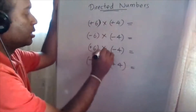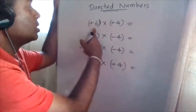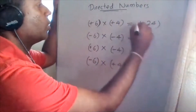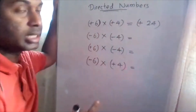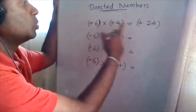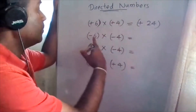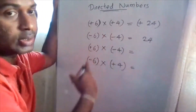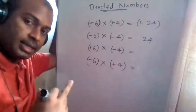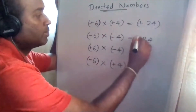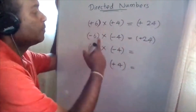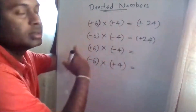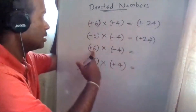Now for multiplication: positive six times positive four equals positive 24. Both are in the same sign — positive times positive gives positive. Negative six times negative four — both are in the same signs, so the result is also positive: 24.